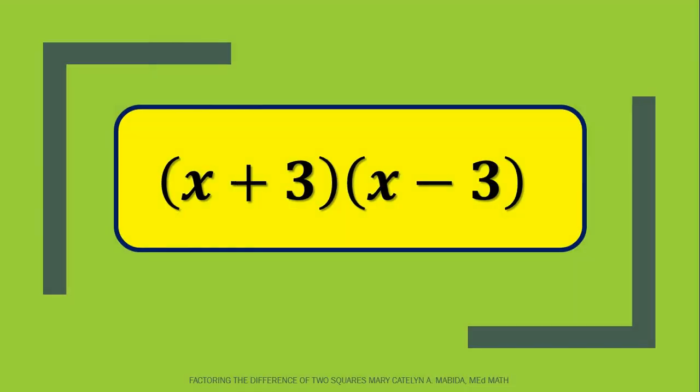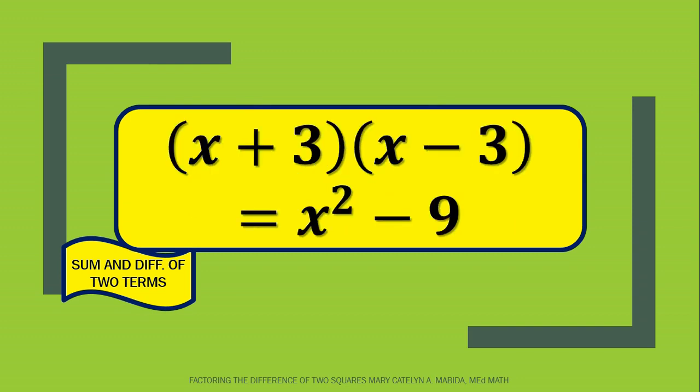Now let's do another recall. The quantity of x plus 3 times the quantity of x minus 3. Are you familiar with the form? Genius! This is the sum and difference of two terms. And the product is? That is right! It's x squared minus 9. Wonderful!